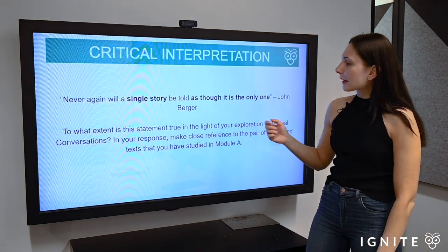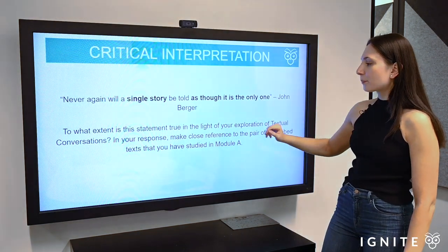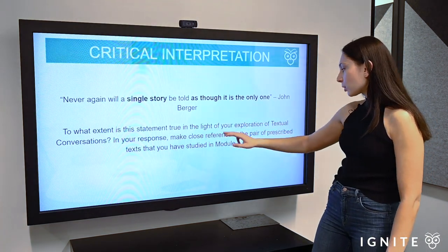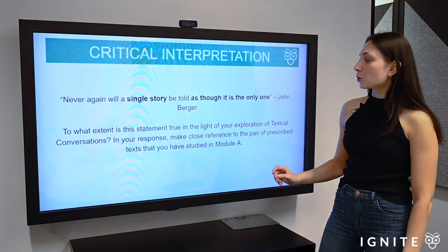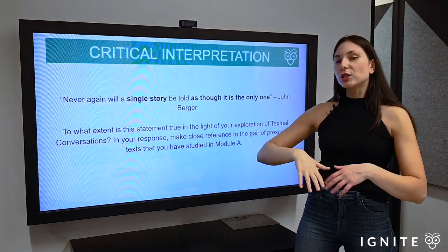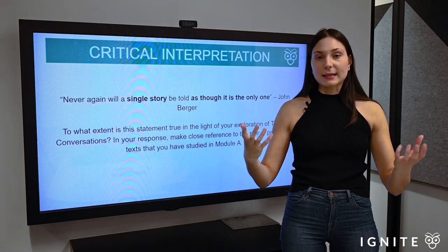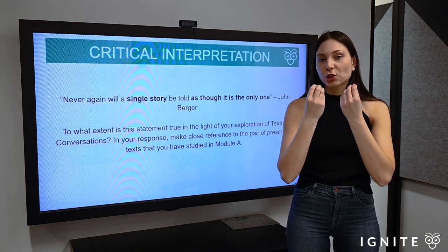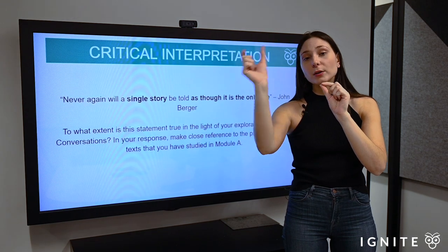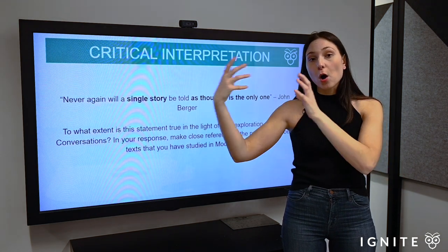Here is the question I'm working with today: 'Never again will a single story be told as though it is the only one' — from John Berger. To what extent is this statement true in light of your exploration of textual conversations? The focus is on this critical interpretation, which gives us a general statement about intertextual dialogue — how a dialogue between two texts opens new ways of understanding, showing that a text can never be read as a single story because it becomes contingent upon and altered in relation to other texts that inspired the adaptation.